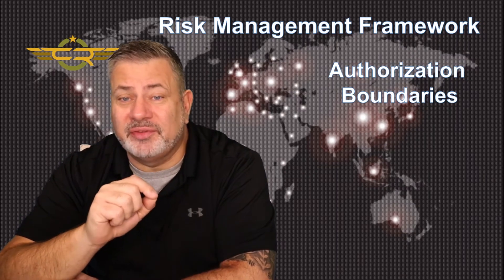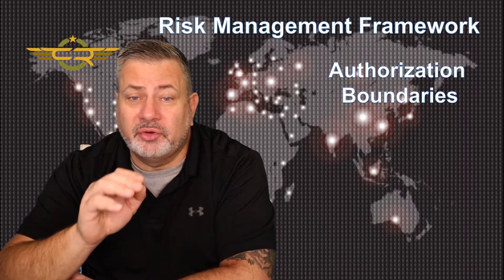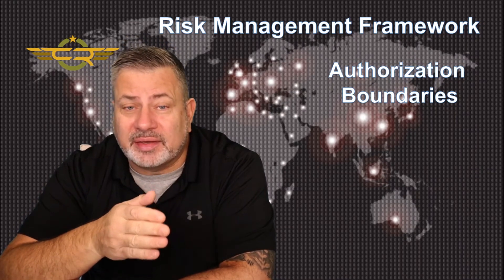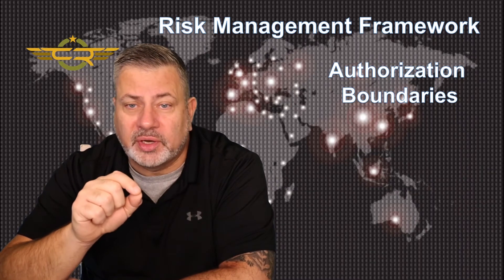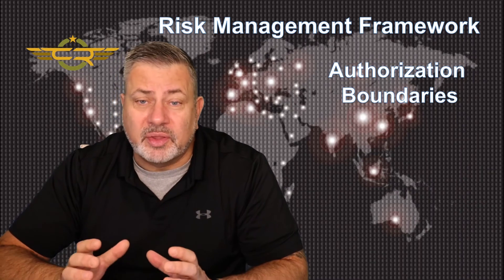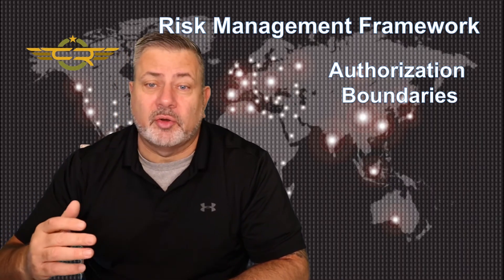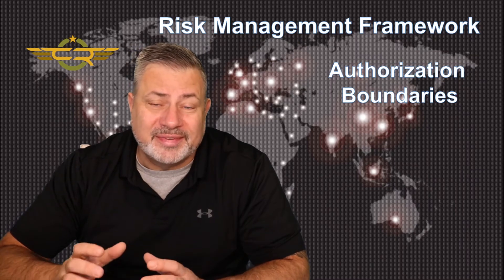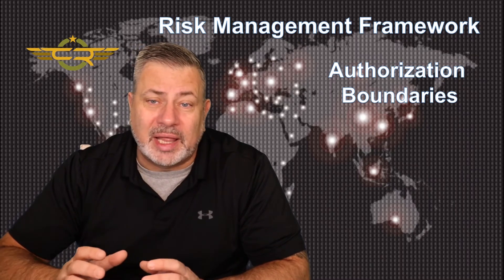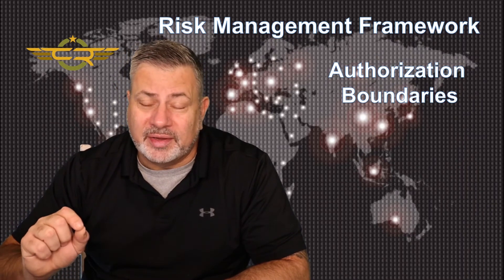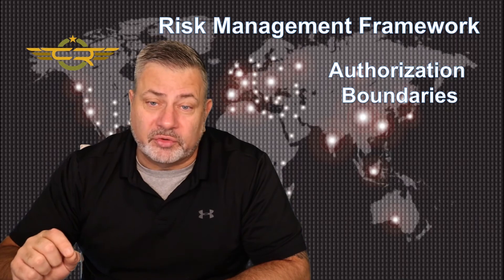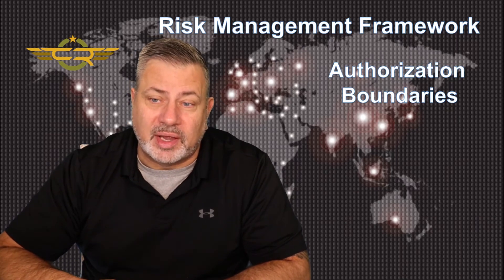Authorization boundaries help a system owner determine what is and what is not in scope for the protection of the system. It defines the boundaries of the system — the things the system owner is responsible for and the things that are beyond their control. This is the area the system owner will apply security and privacy controls to protect. It's important to define boundaries efficiently and effectively for a system, and that's what we'll talk about in this topic.